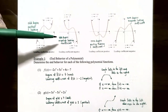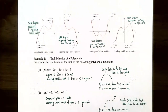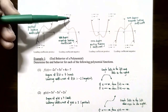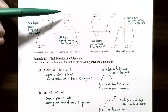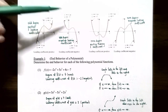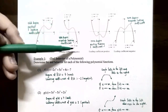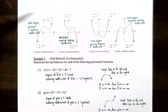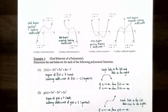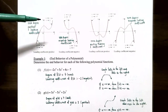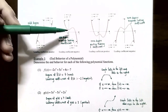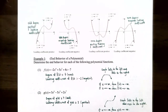Case 2: odd degree with a negative leading coefficient. As x approaches negative infinity, the y values increase without bound, so y approaches positive infinity. As x approaches positive infinity, the y values decrease without bound, so y approaches negative infinity. Again, for odd degree, the ends have opposite behavior — the graph rises to the left and falls to the right.